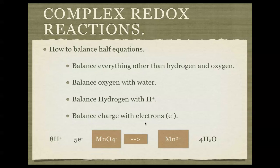I chuck in my pluses, and we have my balanced complex redox reaction, where I have eight hydrogen ions plus five electrons plus my manganate ion going to manganese.